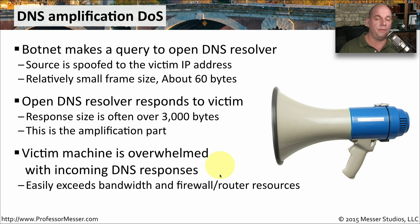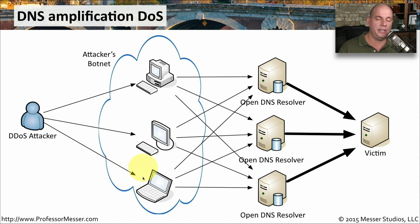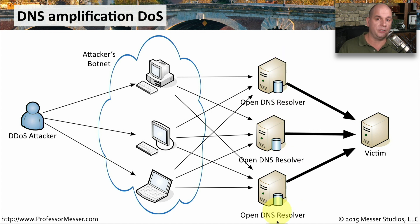The victim can be easily overwhelmed if multiple devices are all doing this at the same time. You will exceed your firewall resources, exceed your bandwidth resources, and cause all services at that site to be denied. The bad guy has already created a botnet with potentially millions of infected devices. He sends a single command through a central IRC chat channel, and all of these devices send their DNS query — usually to multiple open DNS resolvers. That single 60-byte request is quickly amplified to thousands of bytes and sent down to the victim machine.